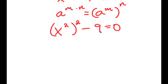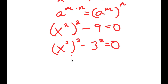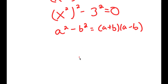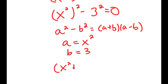Now I'm going to rewrite negative 9 as negative 3 squared. And if I have something in the form a squared minus b squared, this is equal to a plus b times a minus b. In this case, a is equal to x squared and b is equal to 3. So now I'm left with x squared plus 3 times x squared minus 3 is equal to 0.